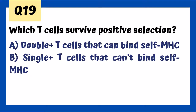Positive selection: double positive T-cells that can bind to self-MHC survive. We want our T-cells to recognize our own MHC. Thymic epithelial cells present self-MHC to the T-cells, and only those that recognize self-MHC survive. We don't want binding too tightly though, as that would lead to autoimmunity — that's what negative selection is about. A defect in negative selection leads to autoimmune polyendocrine syndrome.